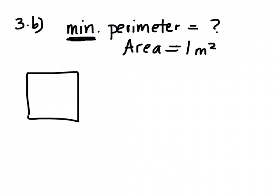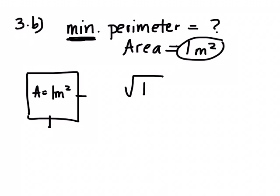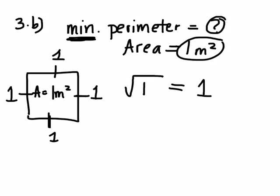A square. We know the area of the square is 1 meter squared. How do you find the side lengths if you're given the area? What's the opposite of squaring a number? Square root. If the area is 1 meter squared, I know that the square root of 1 will give me the dimensions — the length and the width. The square root of 1 is 1. Now that we know the dimensions, the perimeter is 1 times 4 equals 4. So the minimum perimeter would be 4 meters.